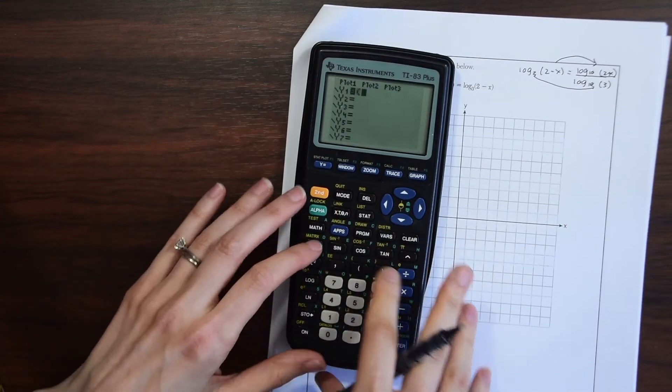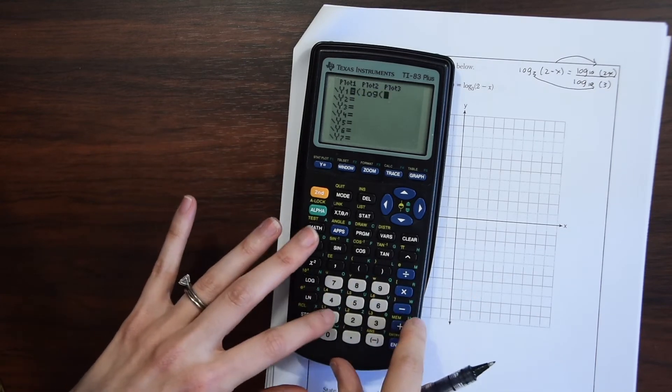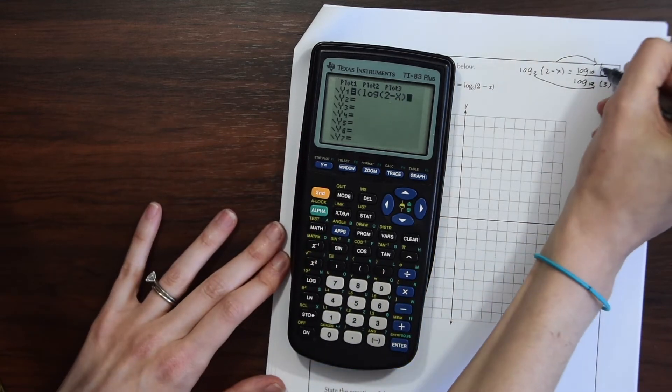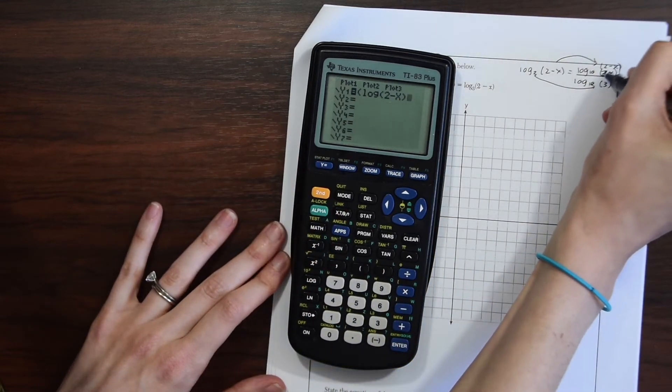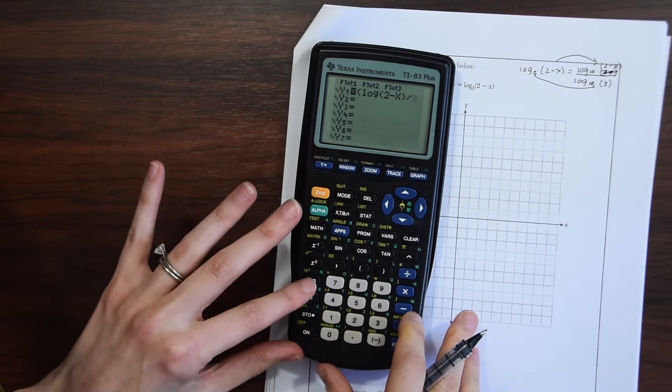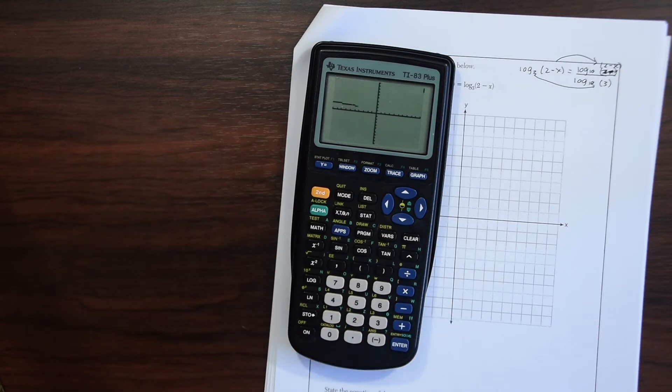So we go to Y= and we enter log of (2 - x) divided by log of 3. Let's graph it and see what happens.